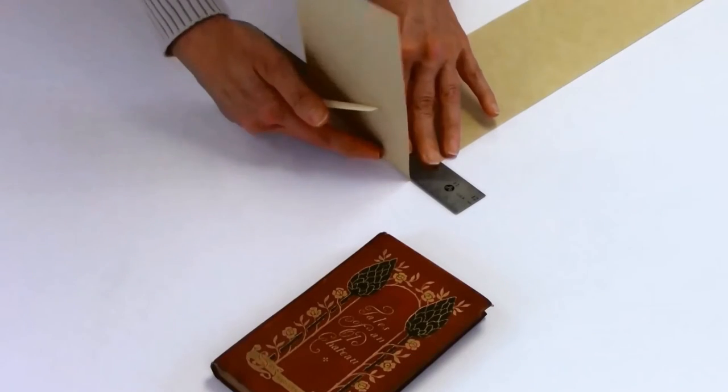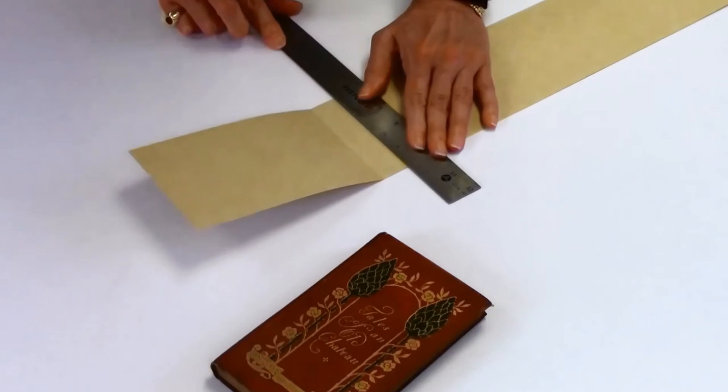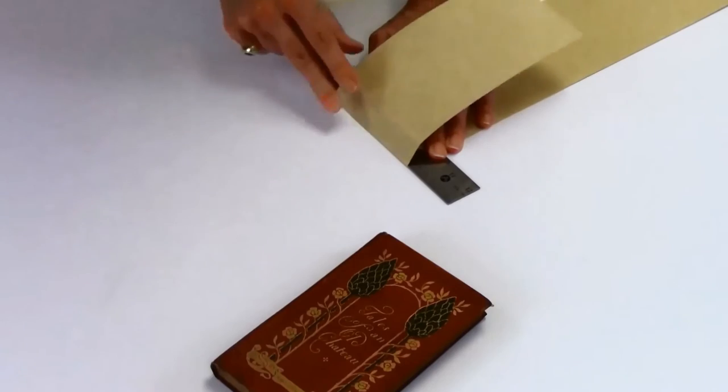Measure the book length and the thickness. Mark your measurements on the card strip and fold it four times to completely cover the book.